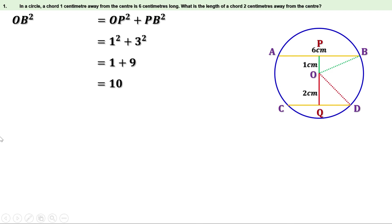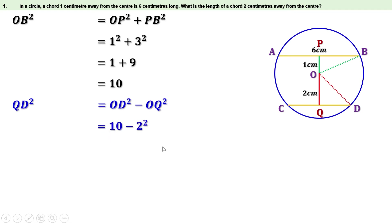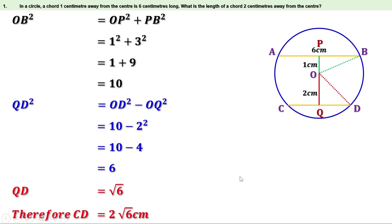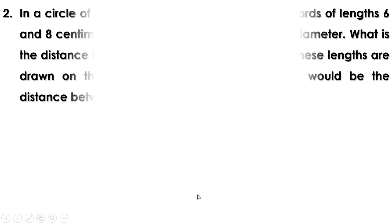OB² = 10. Now in right triangle OQD: QD² = OD² − OQ². Since OB and OD are radii of the same circle, OD² = 10 as well. OQ = 2, so QD² = 10 − 2² = 10 − 4 = 6. Therefore QD = √6. Since QD is half of CD, CD = 2√6. The length of the chord 2 centimeters away from the center is 2√6 centimeters.